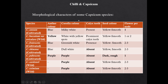Morphological characters of some Capsicum species: Capsicum annum has anther color blue, corolla color milky white, presence of calyx teeth, and seed is yellow in color with smooth surface. Capsicum chinense has anther color yellow, white flower with yellowish spot, prominent calyx teeth, and seed color is yellow with smooth surface.